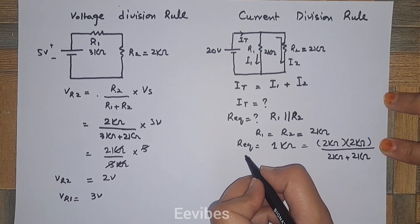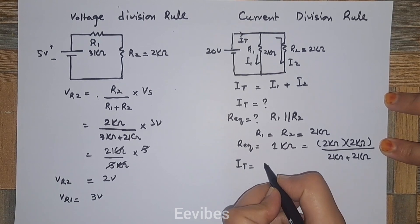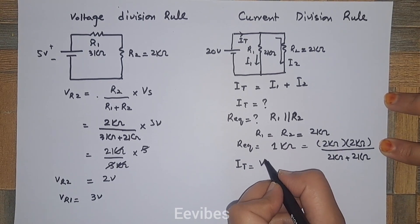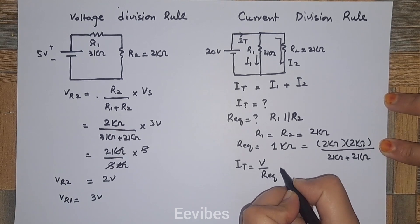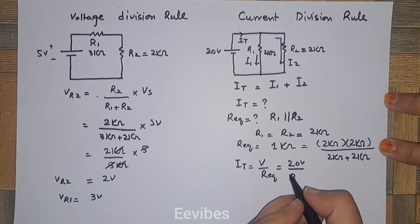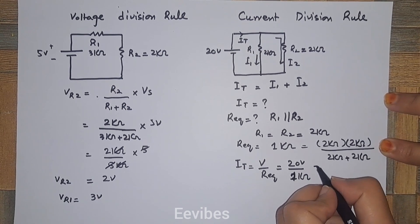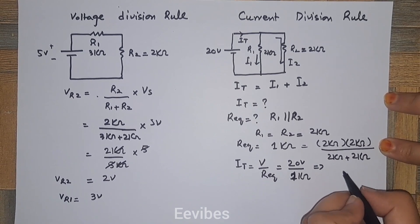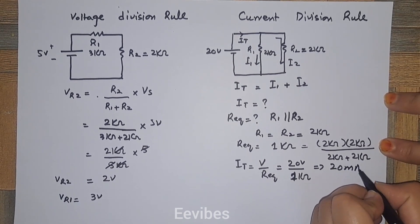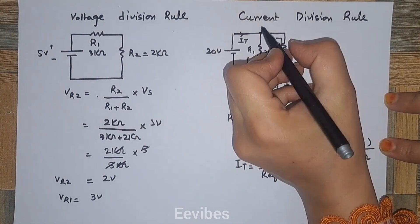Once you have the equivalent resistance, you can find IT using Ohm's law: I equals V over R-equivalent, which is 20 volts divided by 1 kilo-ohm. So 20 volts divided by 1 kilo-ohm gives you 20 milli-amperes. This is the total current flowing in the circuit.